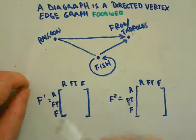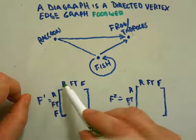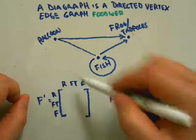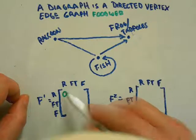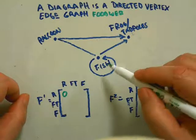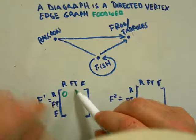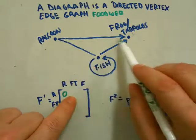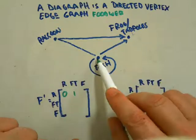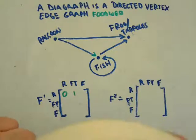First of all, do raccoons eat raccoons? No. If there were, there would be a looping arrow like the fish. Since raccoons don't eat raccoons, you put a zero there. Now, do raccoons eat frogs and tadpoles? Yes, they have one arrow. Do they eat fish? Yes, one direct arrow, so they do eat fish.